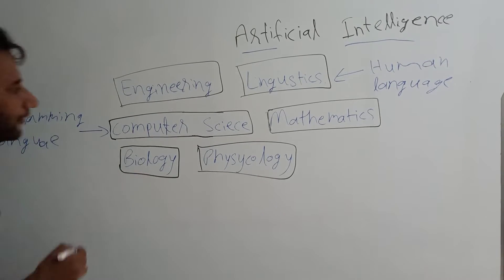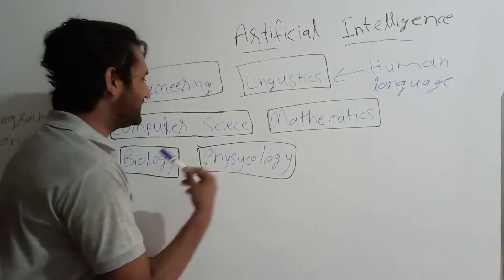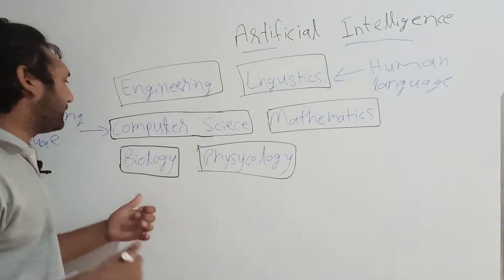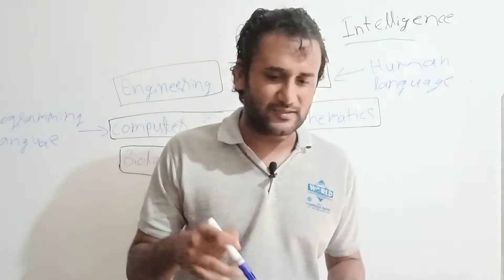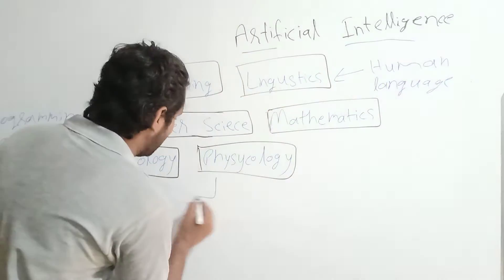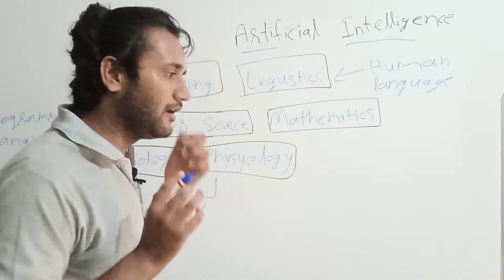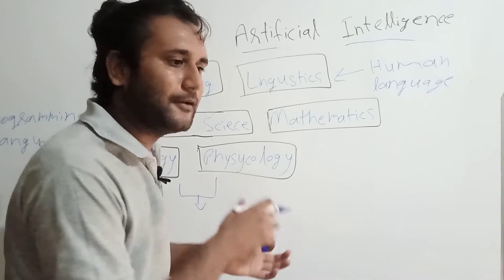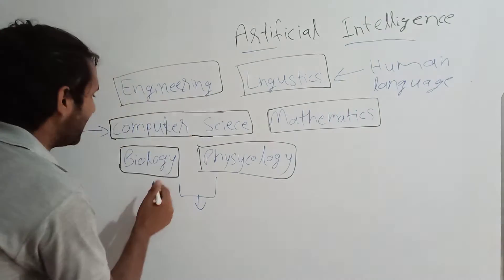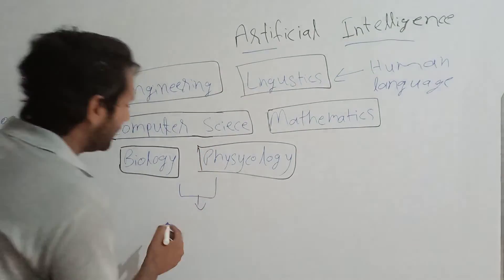Some of you may think: what is the use of biology and psychology in artificial intelligence? Biology and psychology actually constitute major applications in AI. From biology and psychology we can learn how humans think and apply that to machine intelligence. By combining our learnings from human intelligence, we can make better AI.